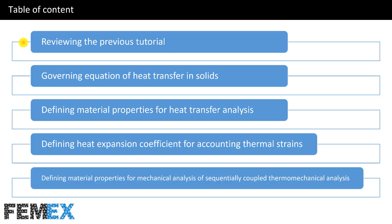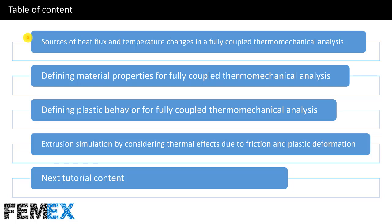This is the table of contents. I will talk about: reviewing the previous tutorial, the governing equation of heat transfer in solids, defining material properties for heat transfer analysis, defining the heat expansion coefficient for accounting thermal strains, defining material properties for mechanical analysis of sequentially coupled thermo-mechanical analysis, sources of heat flux and temperature changes in a fully coupled thermo-mechanical analysis, defining material properties for fully coupled thermo-mechanical analysis, defining plastic behavior for fully coupled thermo-mechanical analysis, extrusion simulation considering thermal effects due to friction and plastic deformation, and finally next tutorial content.